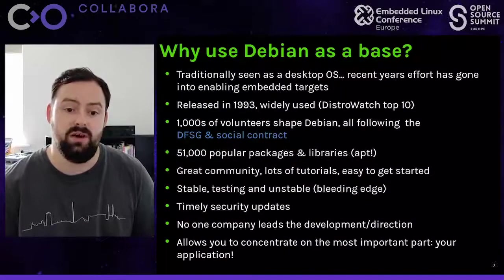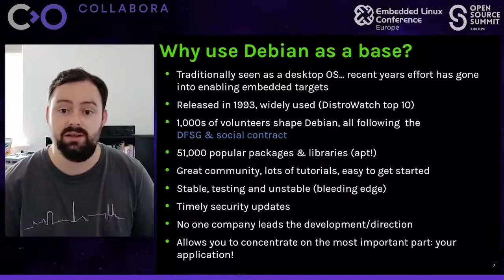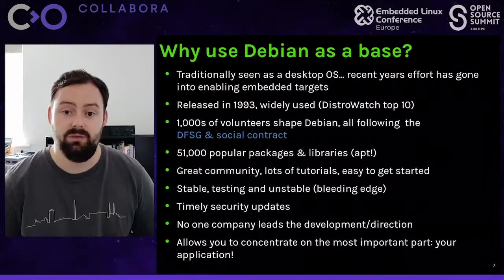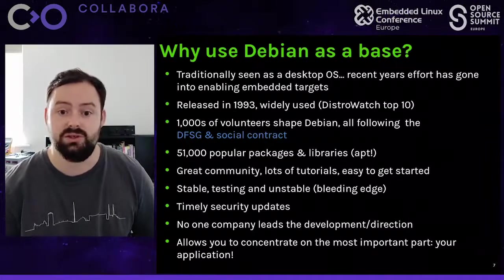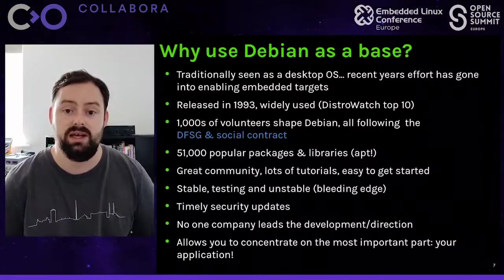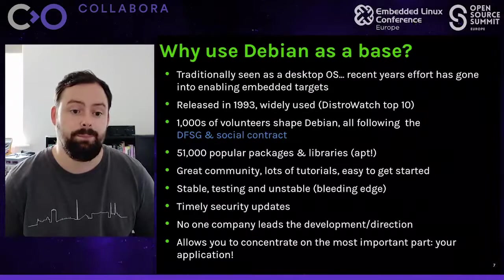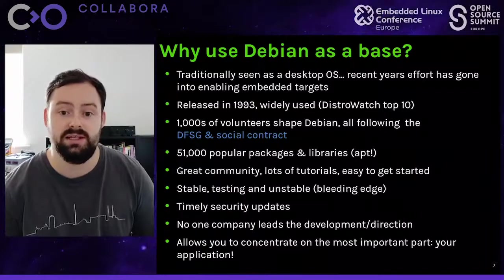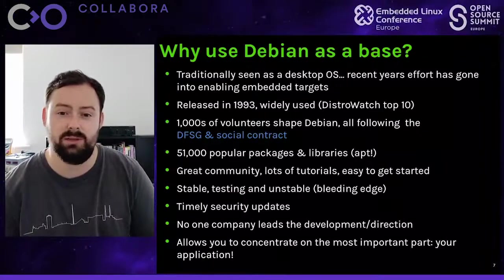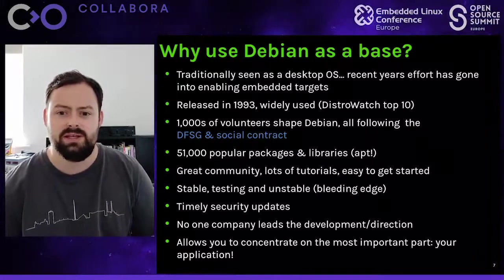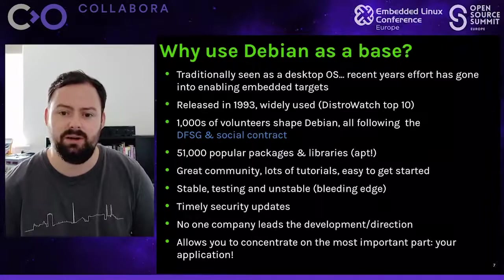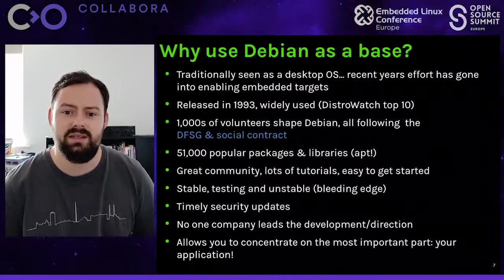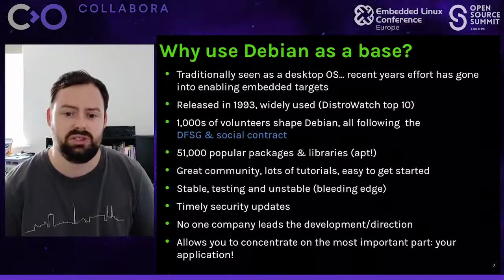Yocto is traditionally seen as a desktop operating system, but in recent years a lot of effort has gone into enabling embedded targets like the Raspberry Pi. There's also a lot of work enabling Debian on RISC-V as well as ARM. Debian was released in 1993 and is quite widely used - it's in the DistroWatch top 10 list. Debian and its derivatives do dominate the DistroWatch list.